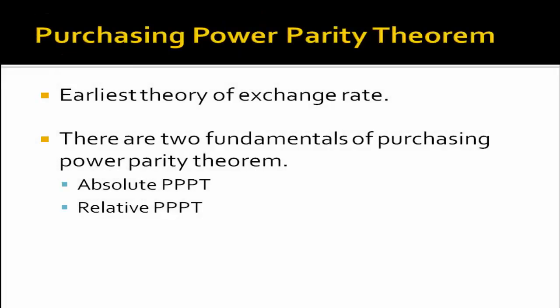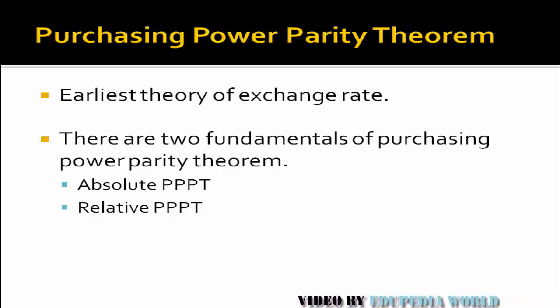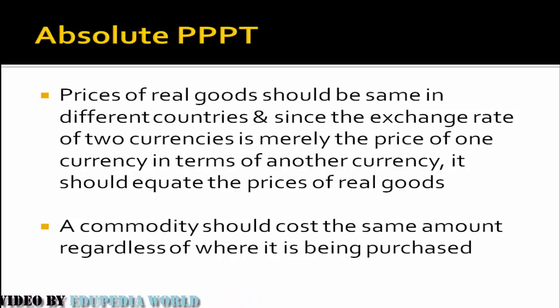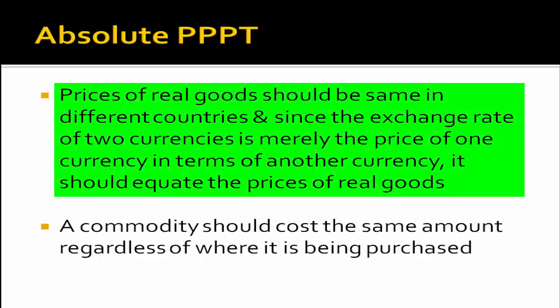One of the oldest theories is the Purchasing Power Parity (PPP) theorem. It has two fundamentals: Absolute PPP and Relative PPP. As per Absolute PPP, the prices of real goods remain the same regardless of the location where they are sold. For example, a calculator costs rupees 150 in India and dollar 3 in USA, so the exchange rate will be rupees 50 per dollar.